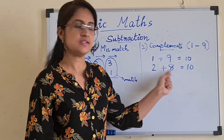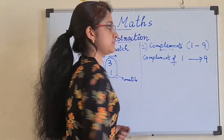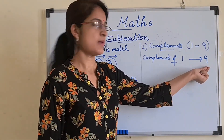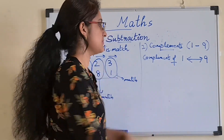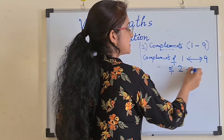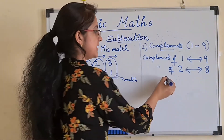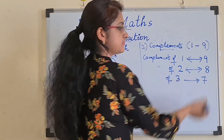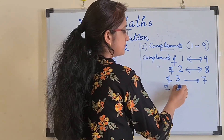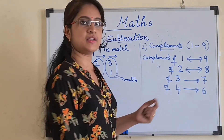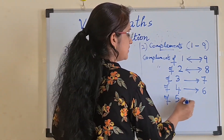The complement of 8 is 2. Complement of 1 is 9, and the complement of 9 is 1. Similarly, the complement of 2 is 8, and the complement of 8 is 2. Complement of 3 is 7, and the complement of 7 is 3. Complement of 4 is 6, and the complement of 6 is 4. And lastly, the complement of 5 is 5 itself.